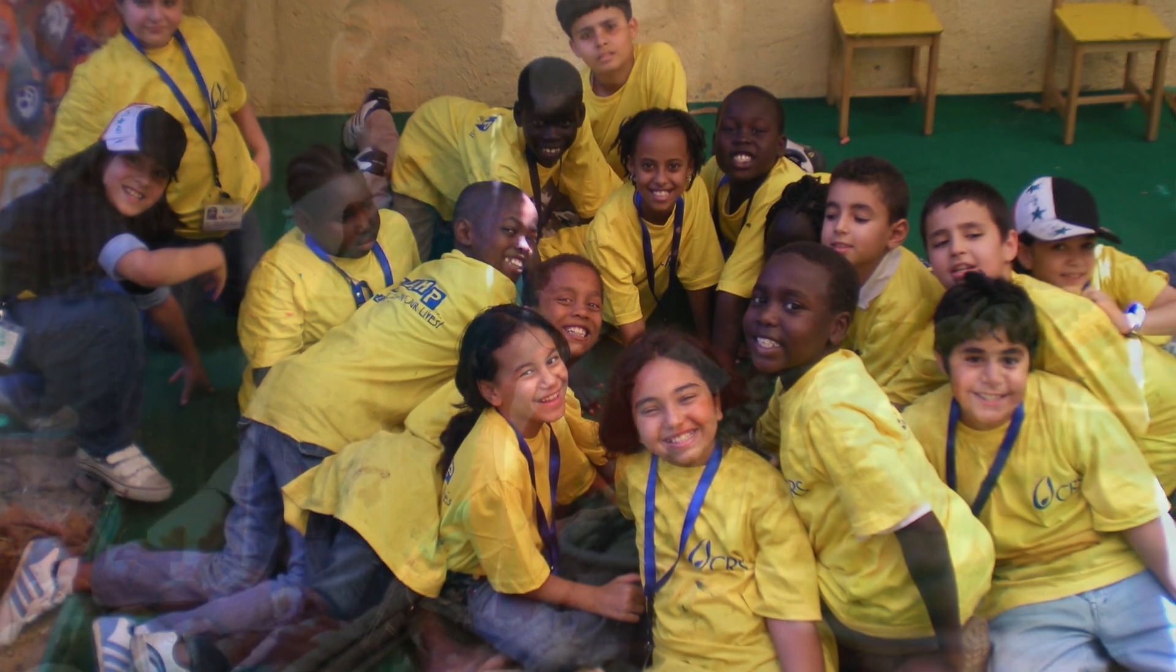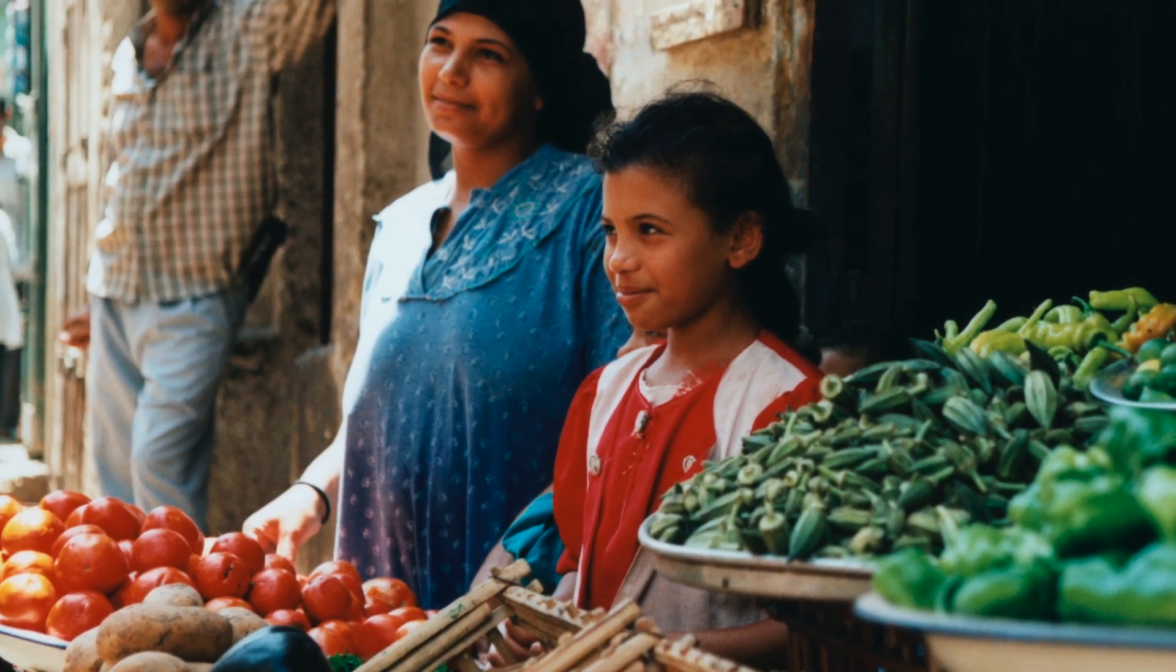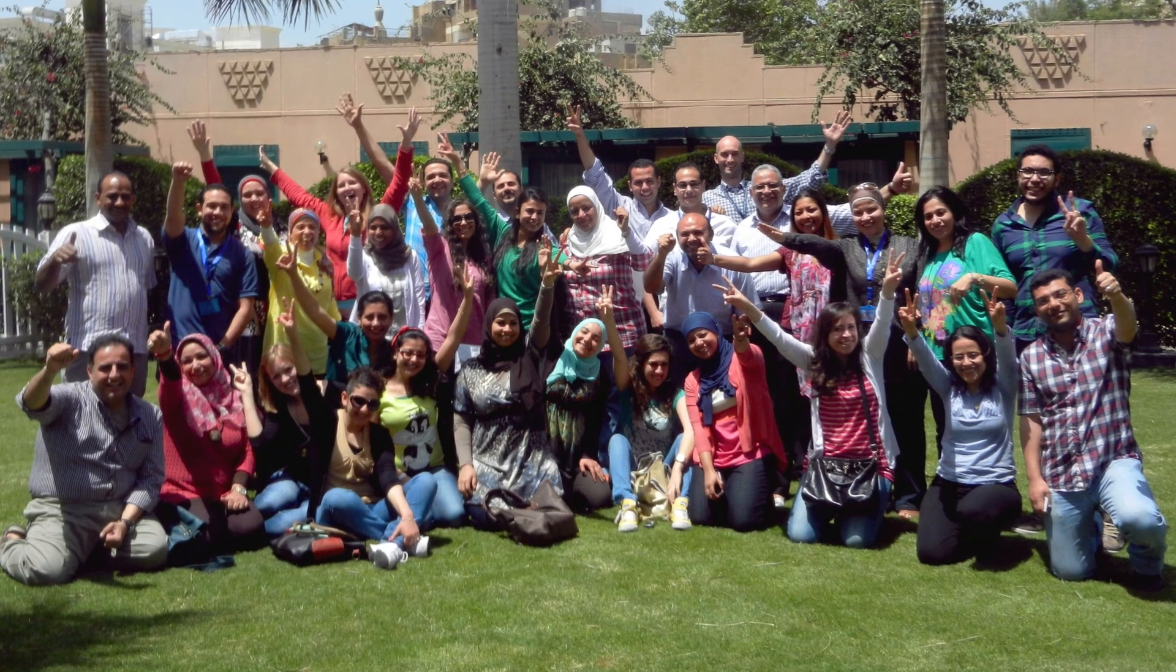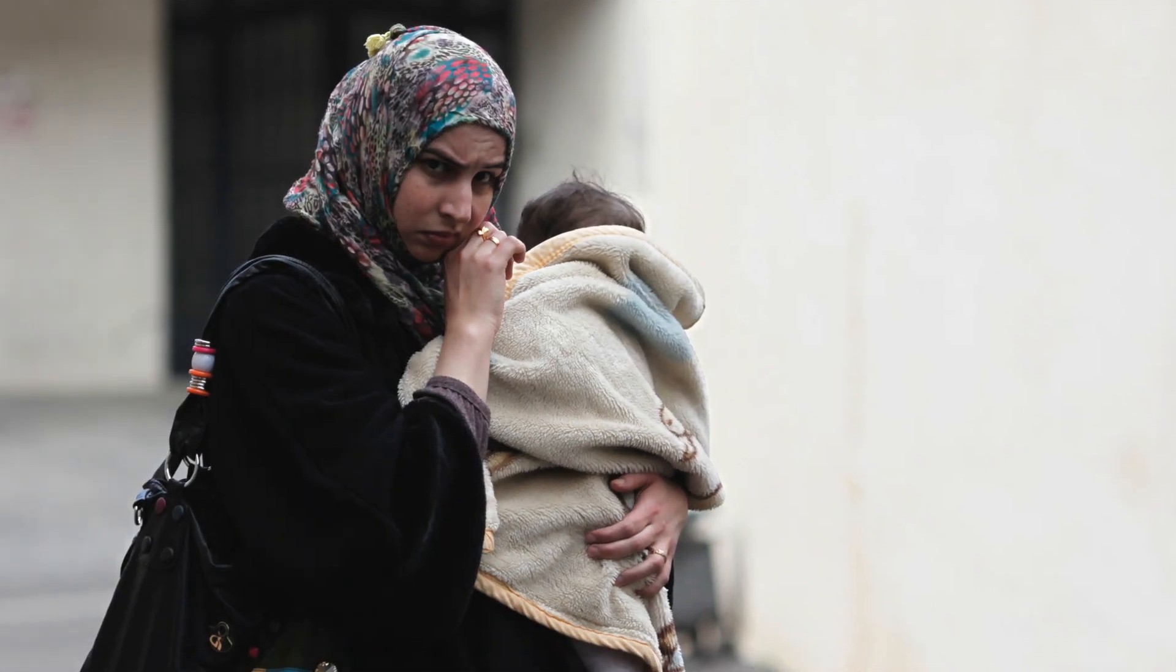We serve nearly 38,000 individuals. CRS Egypt has 76 staff. I am the only international staff. Our major donor is the United Nations High Commission for Refugees. We are currently providing services for 35,000 refugees from Syria, Sudan, Sub-Saharan Africa, and some from Iraq as well.